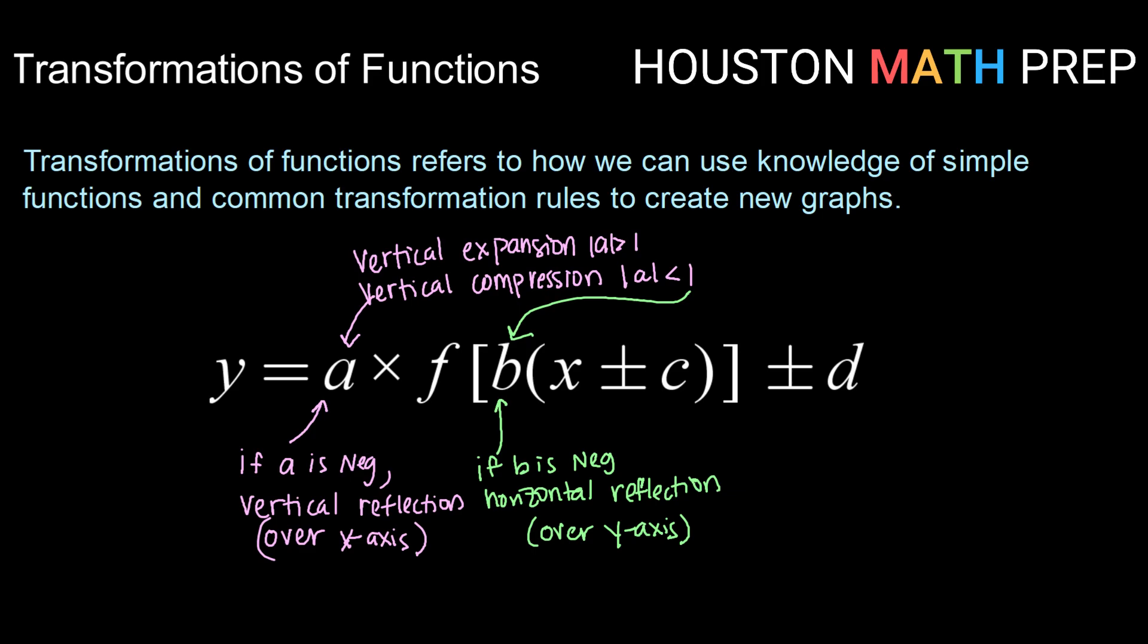And the multiplier on the inside, we will have a horizontal compression if the absolute value of b is greater than one, and we will have a horizontal expansion if the absolute value of b is less than one. So notice these are switched from how a affects things. A gave you an expansion if the absolute value of a was bigger than one. But for b, if the absolute value of b is bigger than one, you get a compression. We're going to notice that that's a theme.